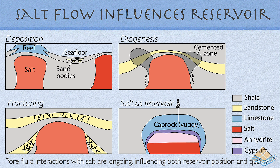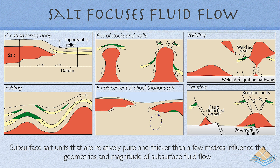Through dissolution, salt can create diagenetic halos and cemented zones. Although it doesn't fracture itself, it can generate fracturing in adjacent sediments, and through its alteration it can create cap rocks which can also act as a form of reservoir. These pore-fluid interactions between flowing salt, its dissolution, and its diagenetic halos influence both reservoir positioning and quality. Salt can create topography, anticlinal closure, seal, key grabens, folds, and bodies of allochthonous salt not necessarily connected to the original autochthonous salt layer. As it moves on, it can create salt welds that act either as seals or as migration pathways, and also as a structural focus for faulting in the overlying sediments.